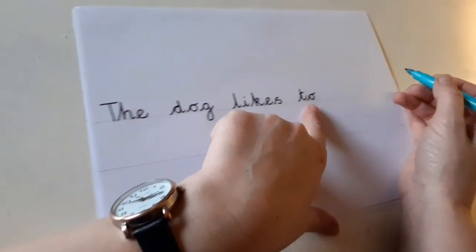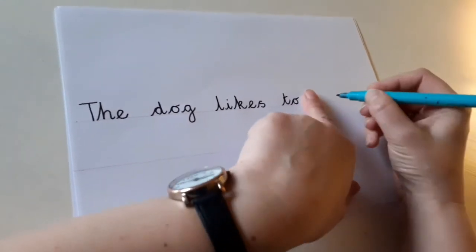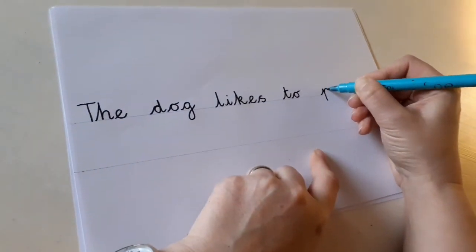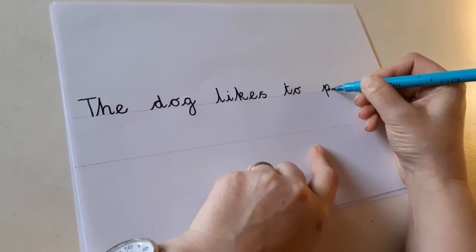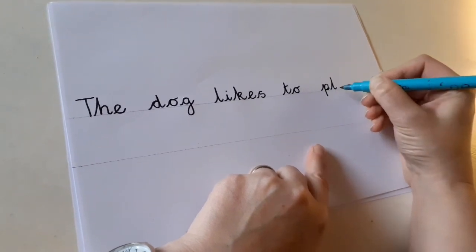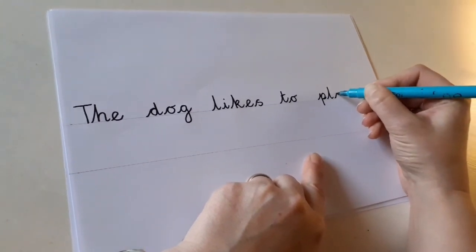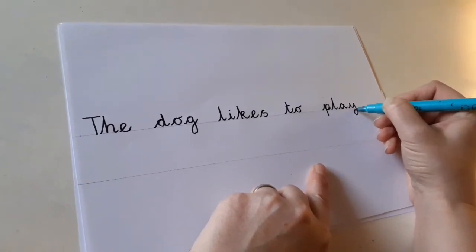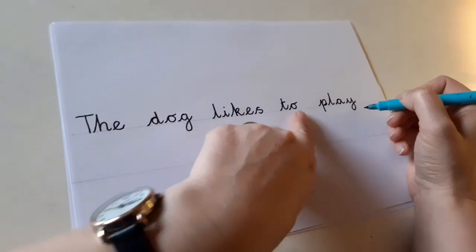Now, we're going to write the word play. So, finger space. Play we've written before. It starts with a P. You can hear that P. P, l, a. And then on the end, there's a y. The dog likes to play.